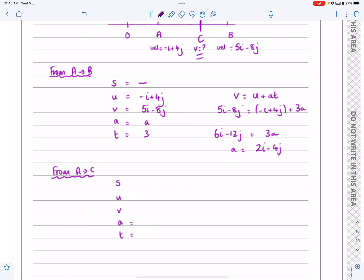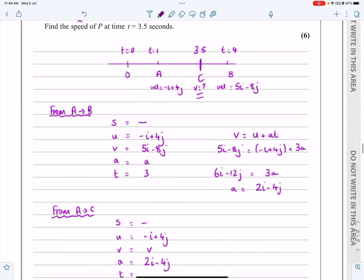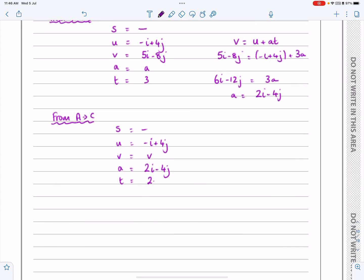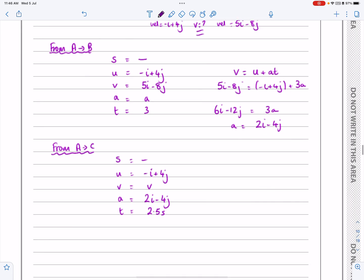I've got a new SUVAT situation. S isn't involved at all. The initial velocity from A is still minus i plus 4j. V is what I'm finding, my final velocity at C. A remains constant throughout, 2i minus 4j. Just be careful here, less likely to make a mistake with the diagram. T is 2.5 seconds, how long that journey takes.